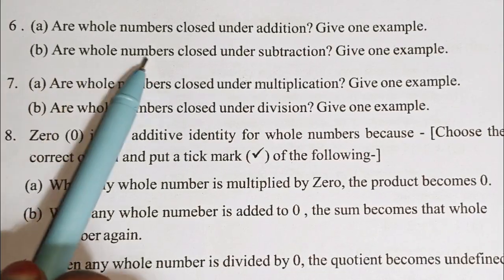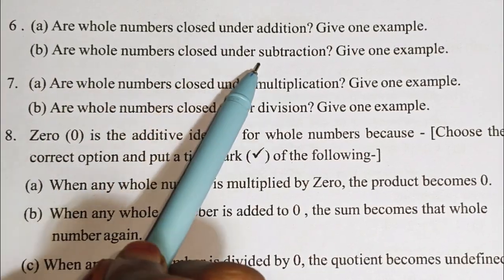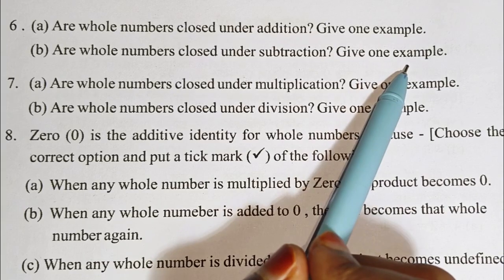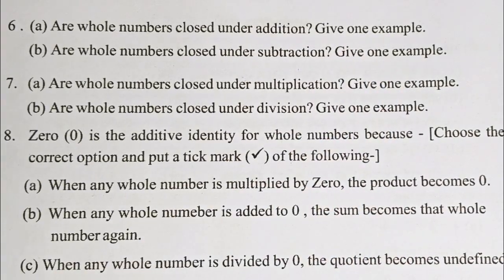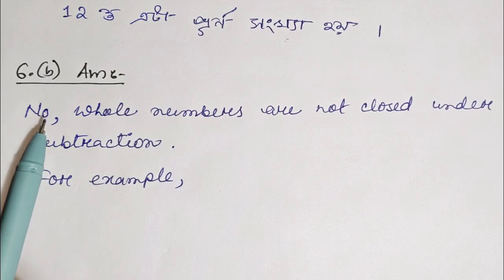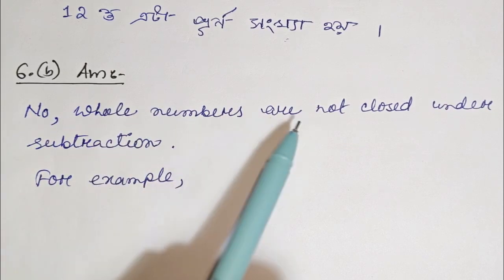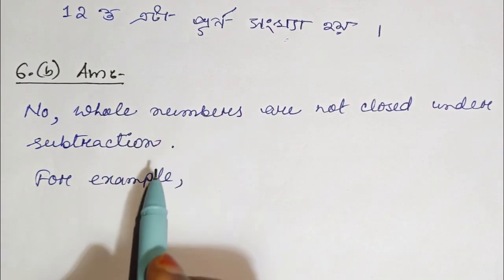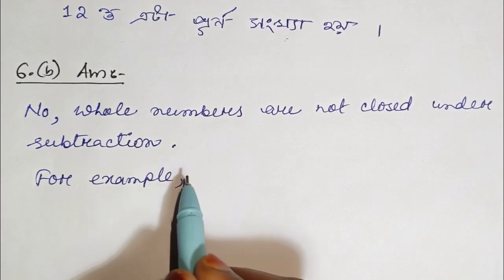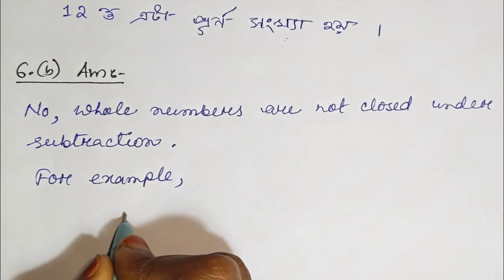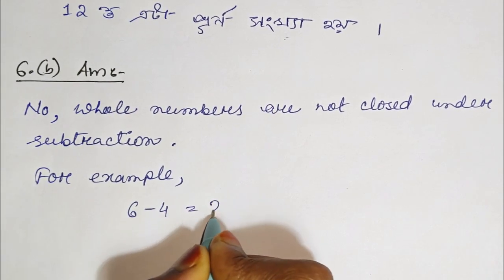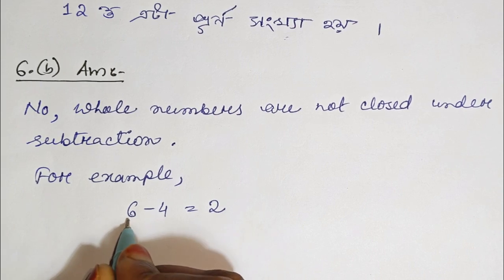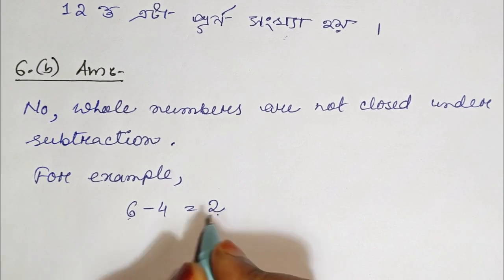Question 6b: Are whole numbers closed under subtraction? Give one example. The answer is no. Whole numbers are not closed under subtraction. For example, 6 minus 4 equals 2, which is a whole number, but subtraction does not always stay within whole numbers.